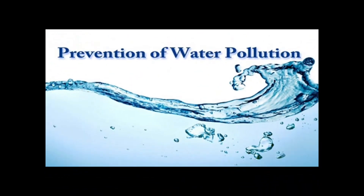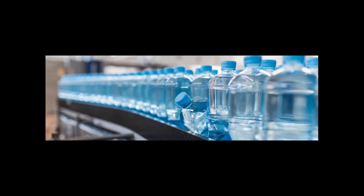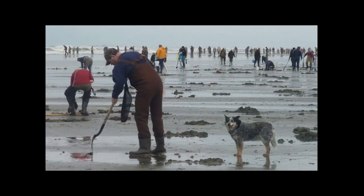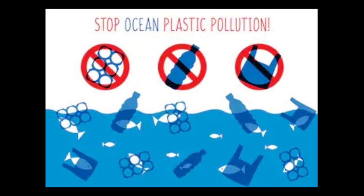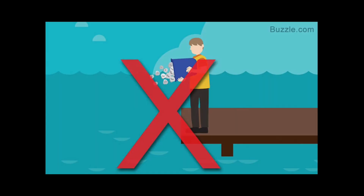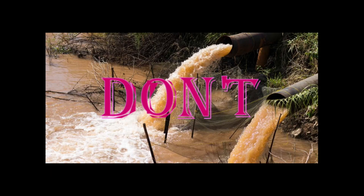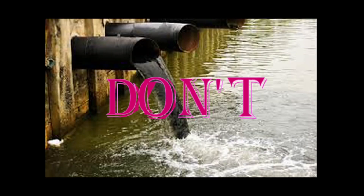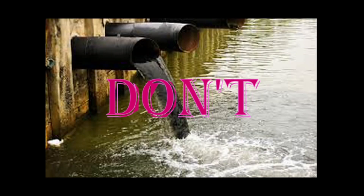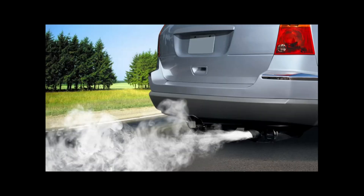Now here are some ways to prevent water pollution. First, reduce your plastic consumption and reuse or recycle plastic when you can. Number two, properly dispose of chemical cleaners, oils, and non-biodegradable items to keep them from ending up down the drain. Number three, maintain your car so it doesn't leak oil, antifreeze, or coolant.